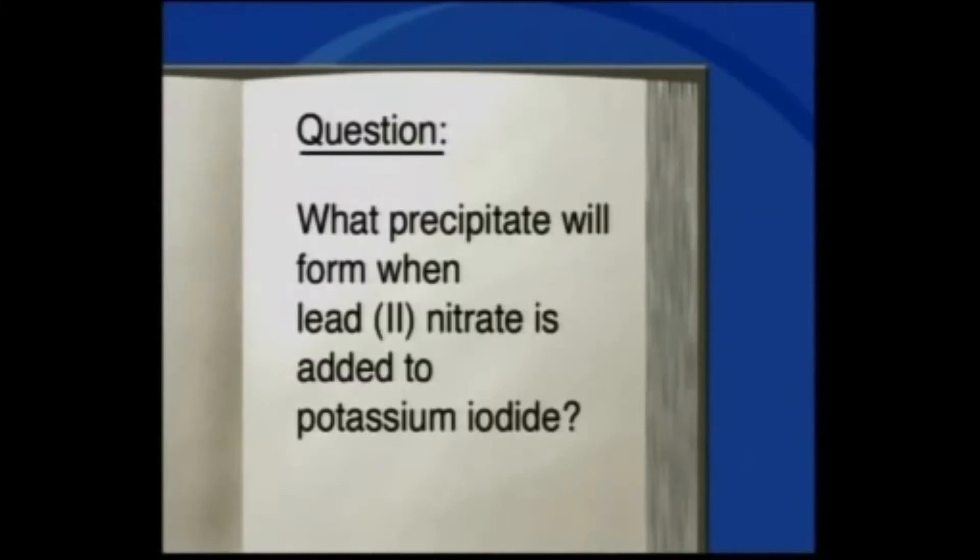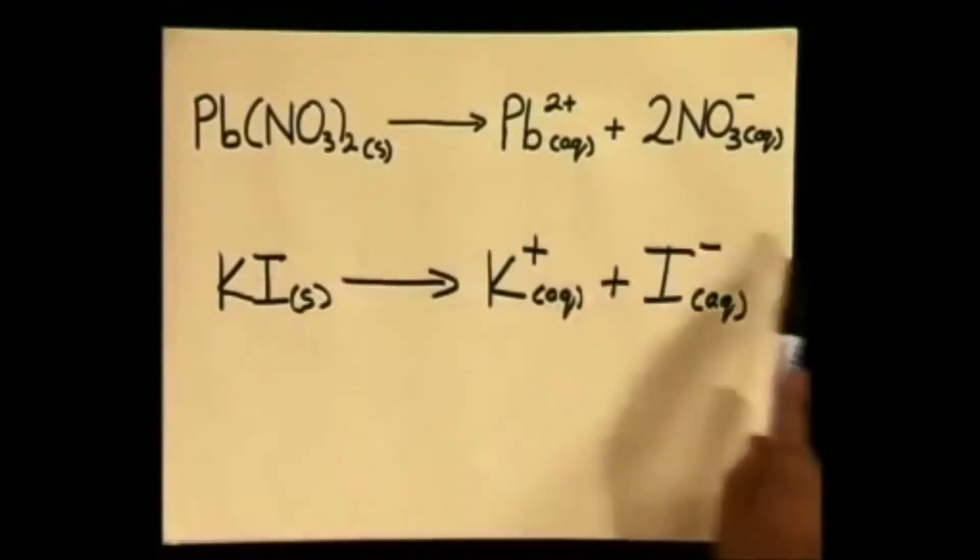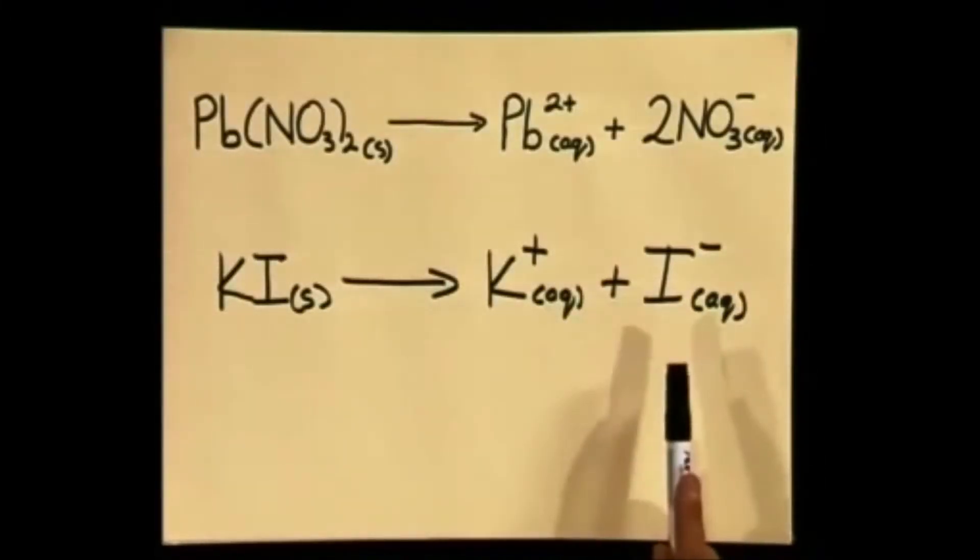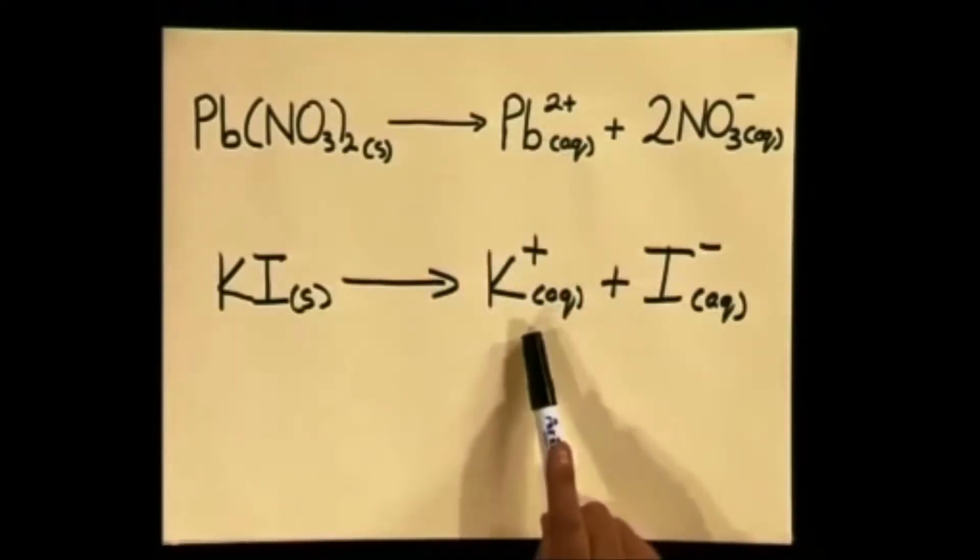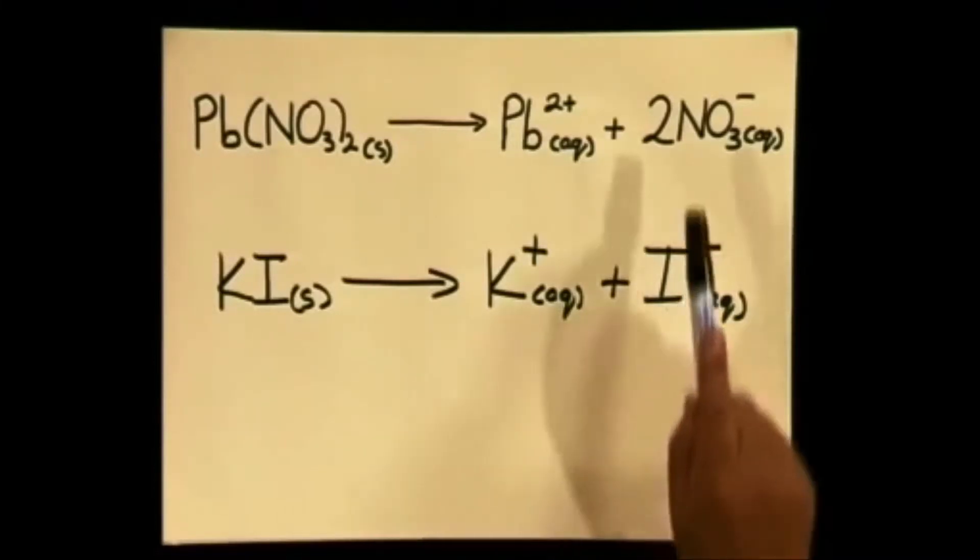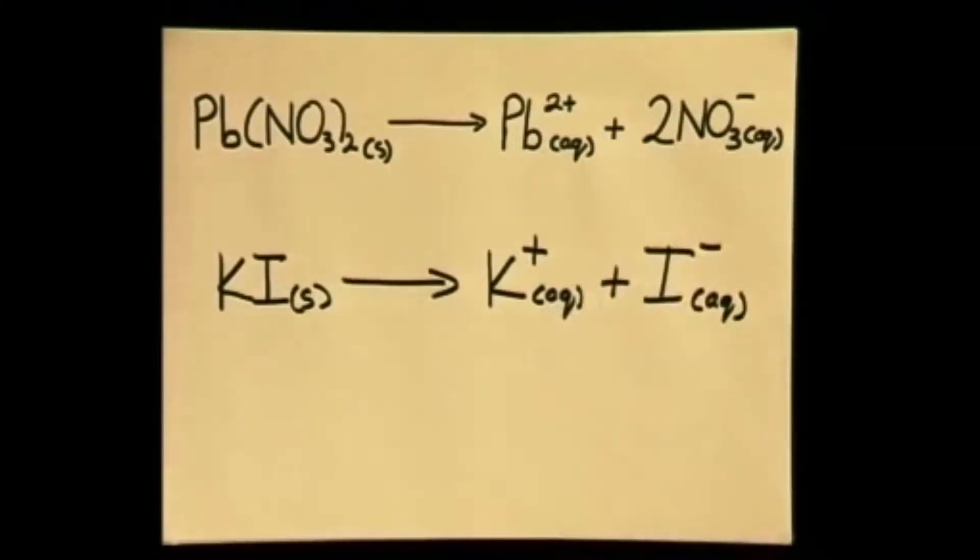Here are our original dissociation equations. Notice that when we mix the two solutions together, we have lead and potassium cations present and iodide and nitrate anions present. These ions are free to move around in the new solution. Any precipitate must be formed from a combination of these ions.